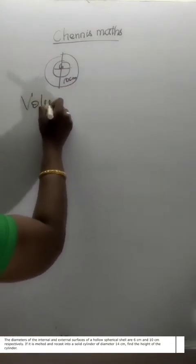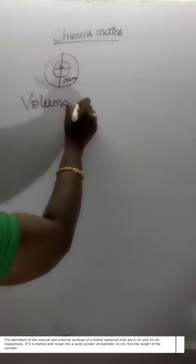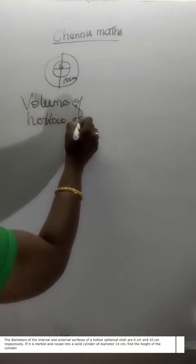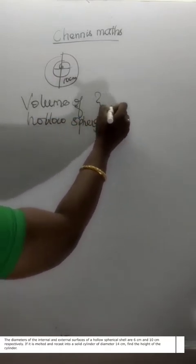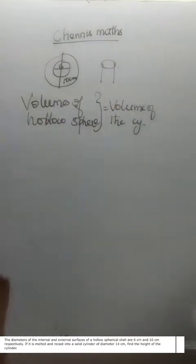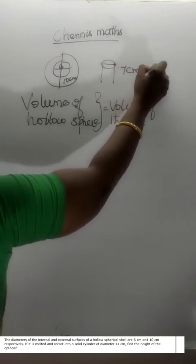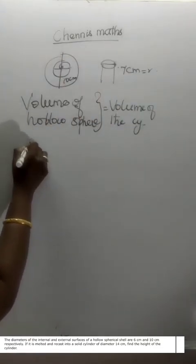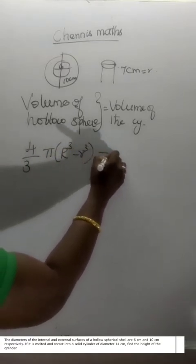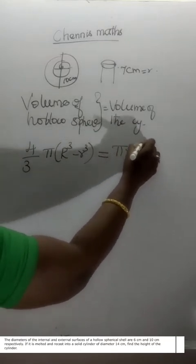The volume of the hollow sphere equals the volume of the solid cylinder. The cylinder's diameter is 14 centimeters, so the radius is 7 centimeters. The formula: 4 by 3 pi (capital R cubed minus small r cubed) is equal to pi r squared h. Pi cancels on both sides.